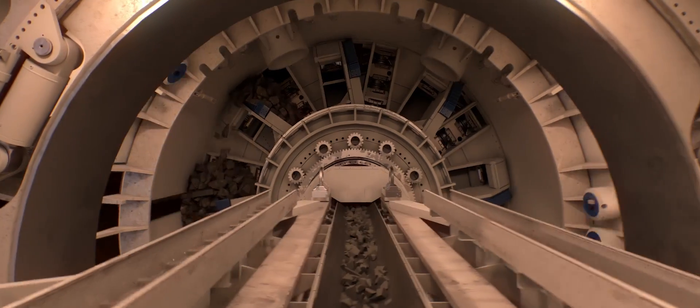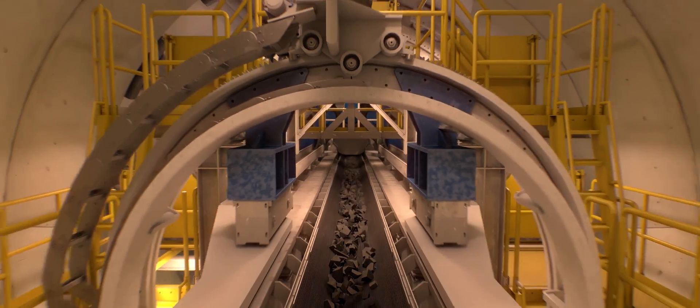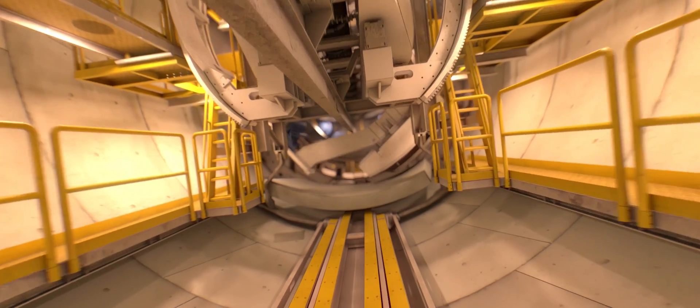In hard rock mode, the TBM operates like a single shield TBM. The transfer of high thrust through the rolling disc cutters creates fractures in the rock, causing chips to break away from the face. Boring and lining installation are performed sequentially.